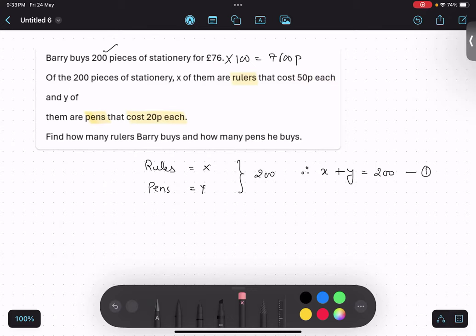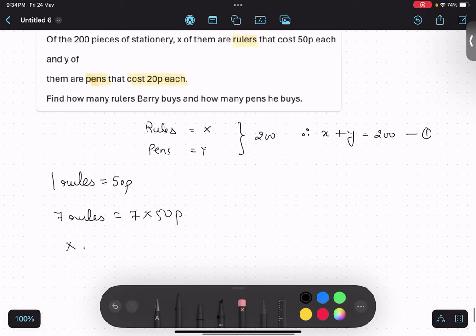Now, each cost of ruler is 50 pesa. If one ruler is 50 pesa, then what is the cost of seven rulers? You can consider 50 rupees. One ruler is 50 rupees. What will be the cost of seven? You just have to do 7 into 50, right? And what is the cost of x rulers in that case? X into 50. Makes sense? Yeah.